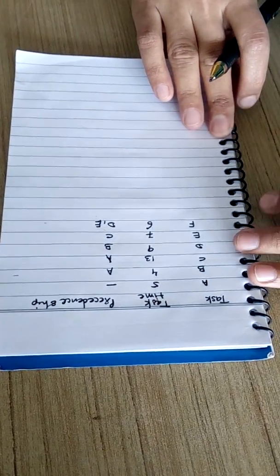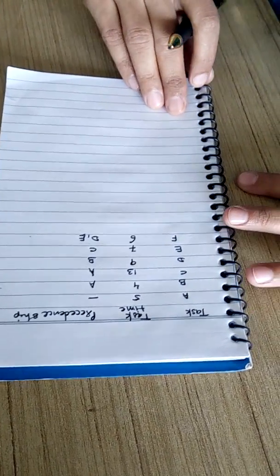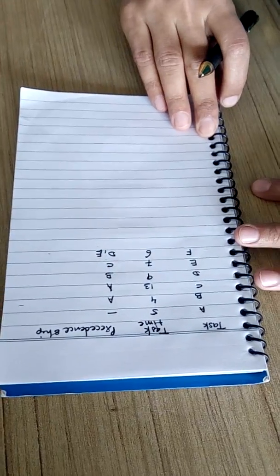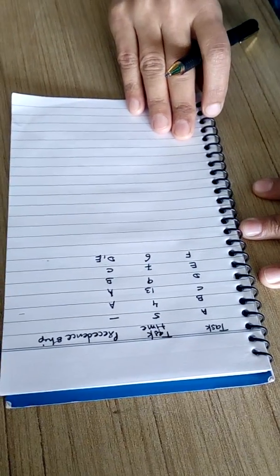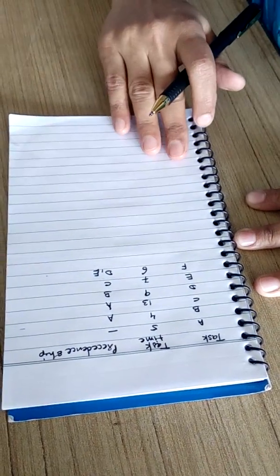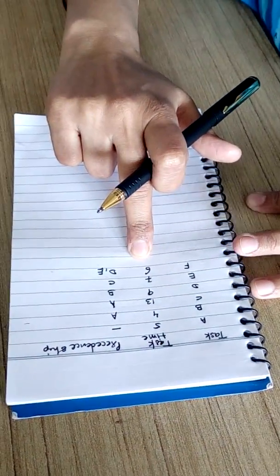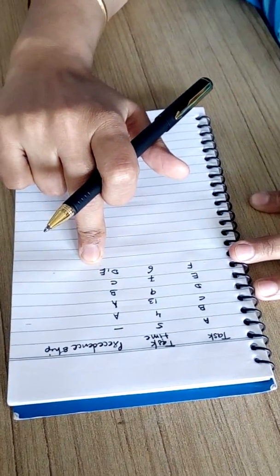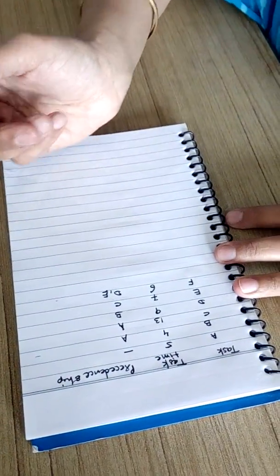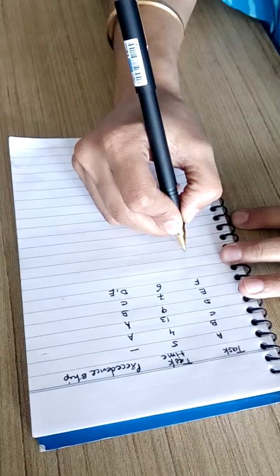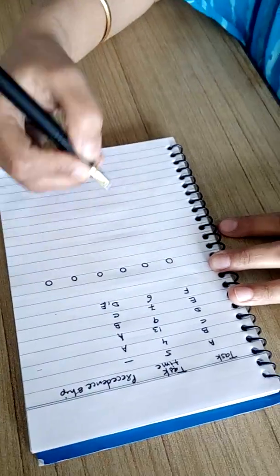Today we will be learning about line balancing problem. I hope that you must have passed through different types of layout when you were in the industries. Basically this line balancing problem deals with product type of layout. Now let us consider what are the challenges. Let us consider one example where the different tasks are given. Task times are given in minutes and precedence relationship is given. Now the main disadvantage of product type of layout can be that each station will have their own processing time.